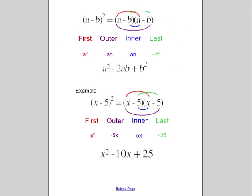Using FOIL again gives x² - 5x - 5x + 25. When simplified, this gives x² - 2 times 5x, which is minus 10x plus 25.